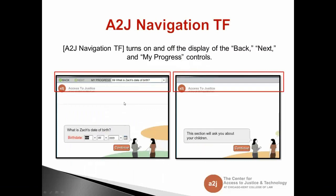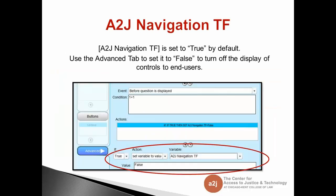The next thing to talk about is the A to J navigation true-false program variable. By default we have the back, the next, and the 'my progress' bar that runs across the top of every interview. You can turn that off so it displays nothing at all. You do it by setting an advanced condition and telling A to J Author — because the default is true — to change the default to false if something happens.